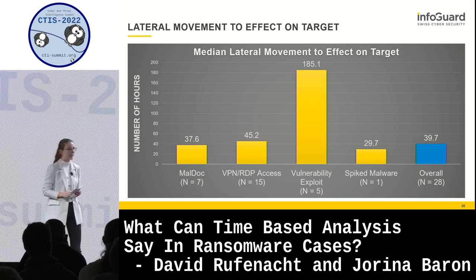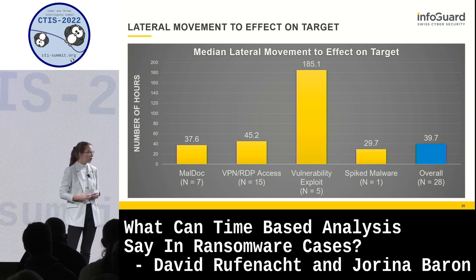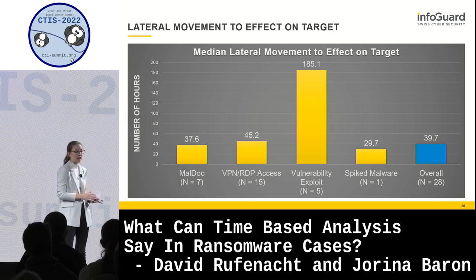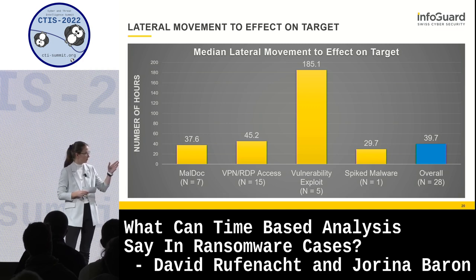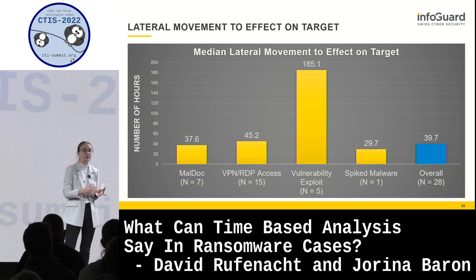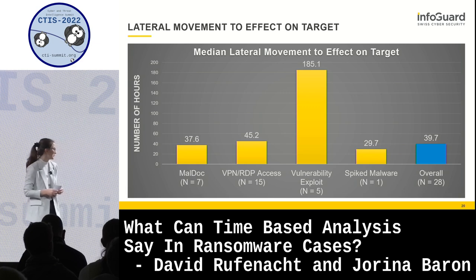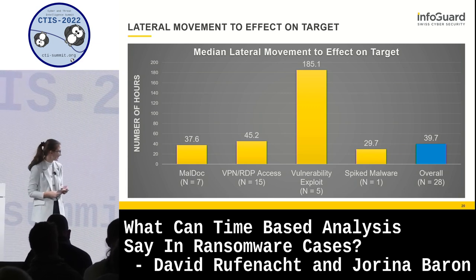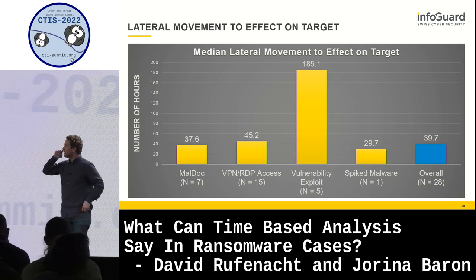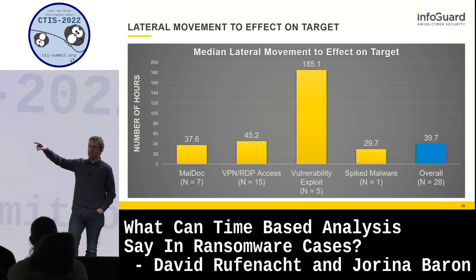In this short 40-hour timeframe, the IR team of InfoGuard was able to kick out some of the attackers, but it was of course more difficult and complex than if they had detected the attackers before this point. You might have noticed that the 14 days from initial access to lateral movement and the roughly one and a half days from lateral movement to effect on target don't sum to 25 days - this is an obvious downside of using the median.